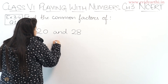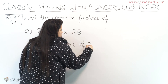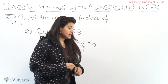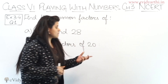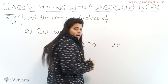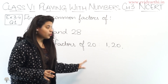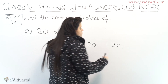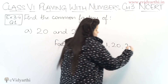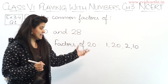First we will start with factors of 20. When the number is 20, we will write the factors. We know that 1 and 20 are always factors — all numbers have 1 and the number itself as factors. Next, we take 2: since 2 into 10 is 20, both 2 and 10 are factors.